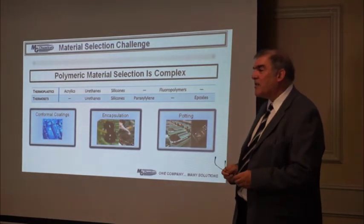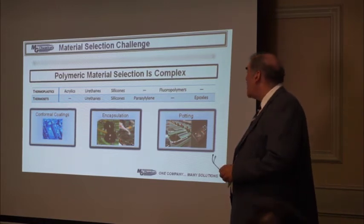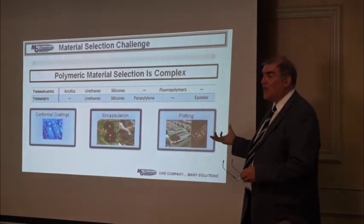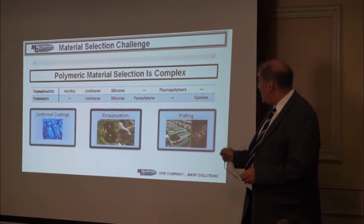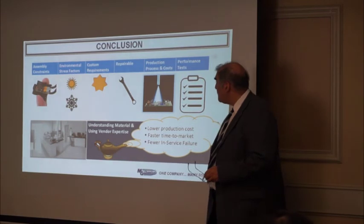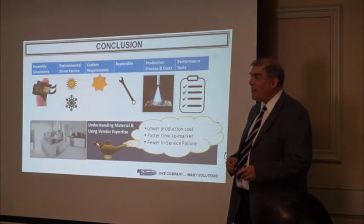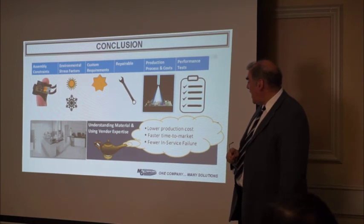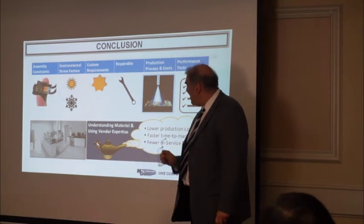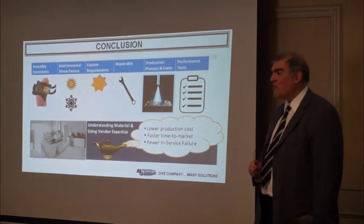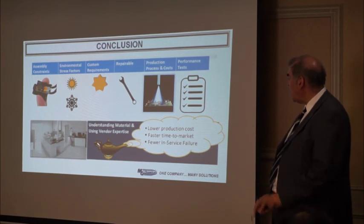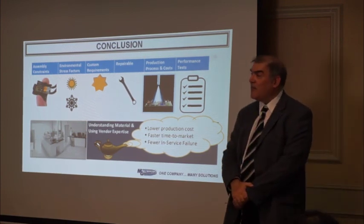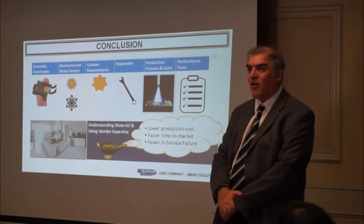What I've shown you is that material selection is actually a fairly complex thing. You have many choices, and the reason there are many different chemistries is because we're trying to serve many different needs. When thinking about material selection, remember the engineering design steps you need to go through. Think about contacting your vendor when you need expertise on materials, because we also want you to have low production costs, faster time to market, and fewer in-service failures. We'll always try to steer you towards the best material possible. Thank you.